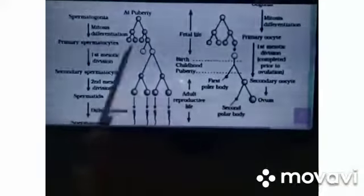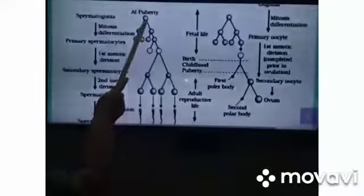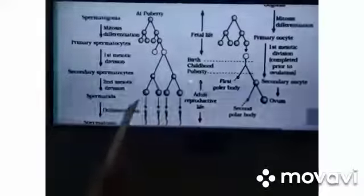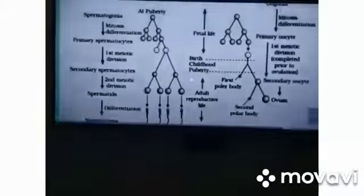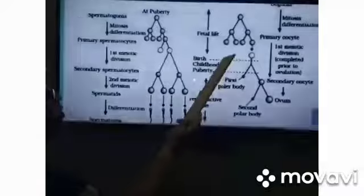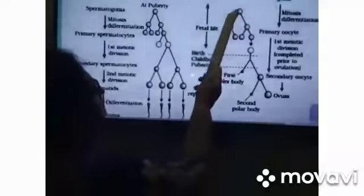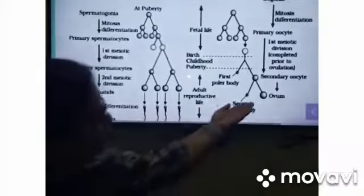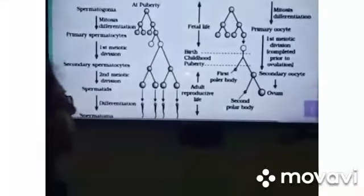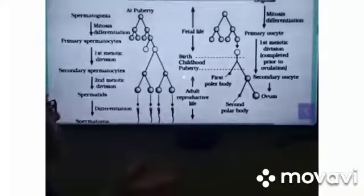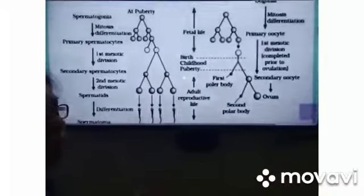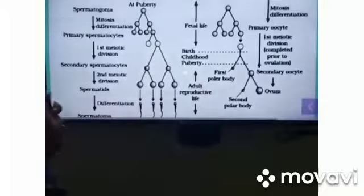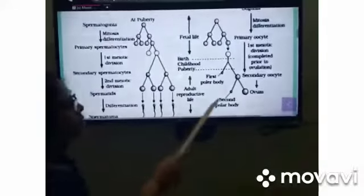From one Spermatogonium, four Spermatids are formed - that is, four gametes are formed. But in the second figure, you are seeing from one oogonium, how many gametes are formed? Only one gamete is there. Sometimes we are asked such a question, how many ova are formed? How many female gametes are formed from one oogonium? Here, four gametes are formed. Here, only one female gamete is formed.